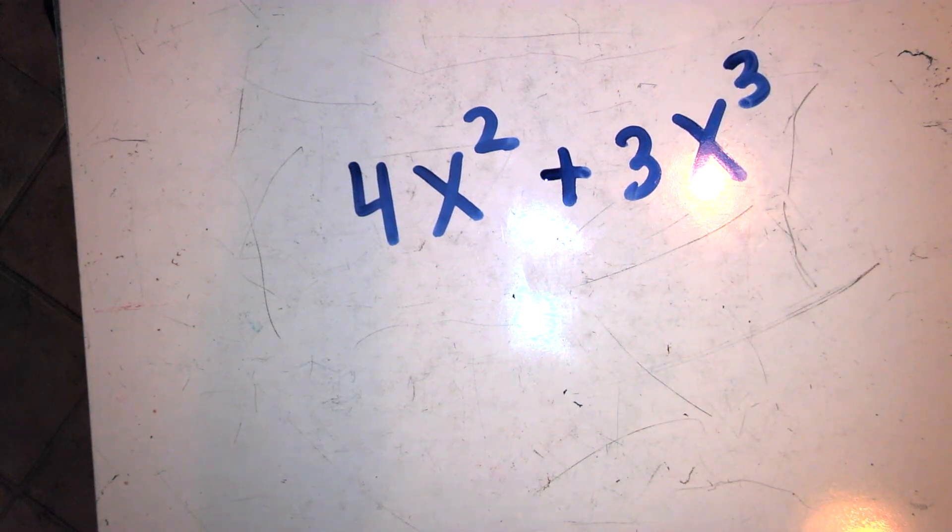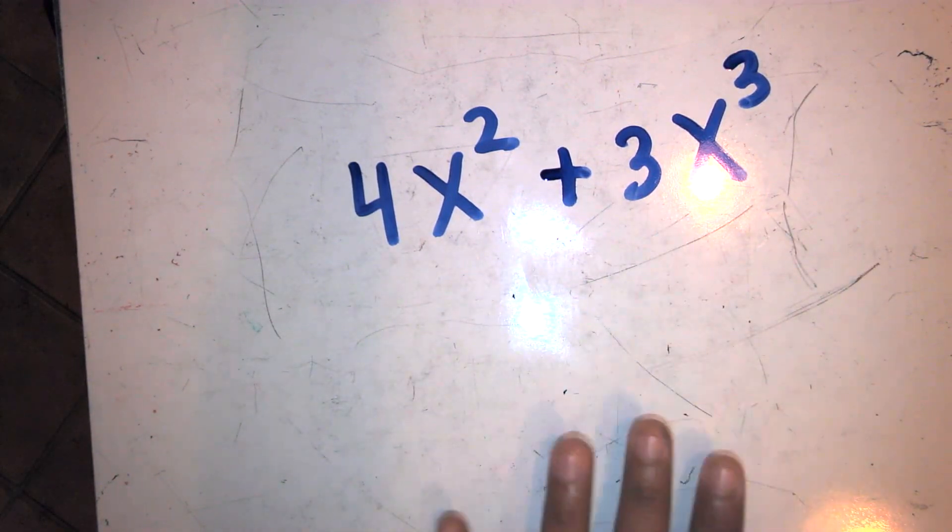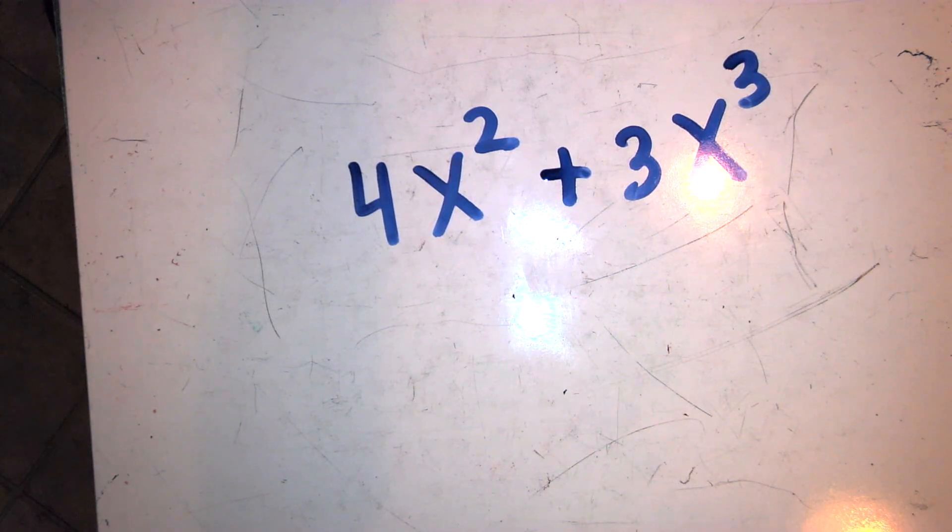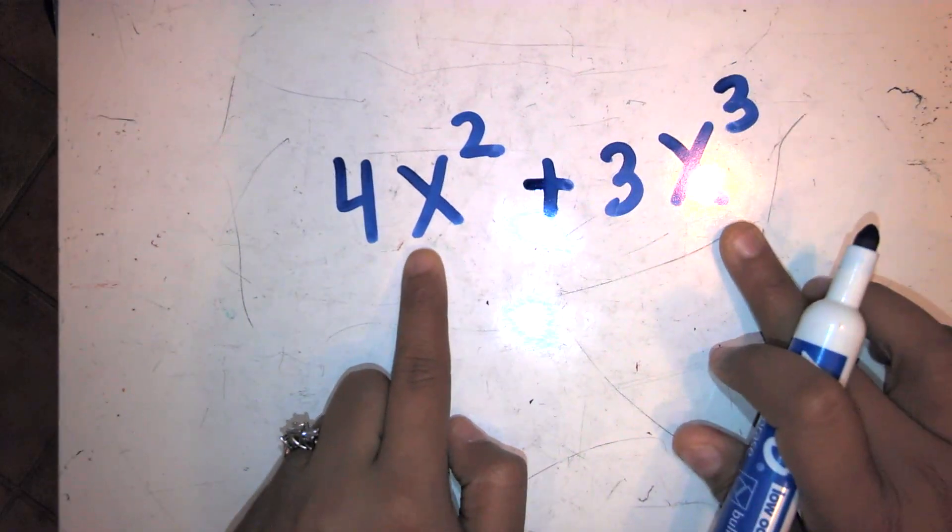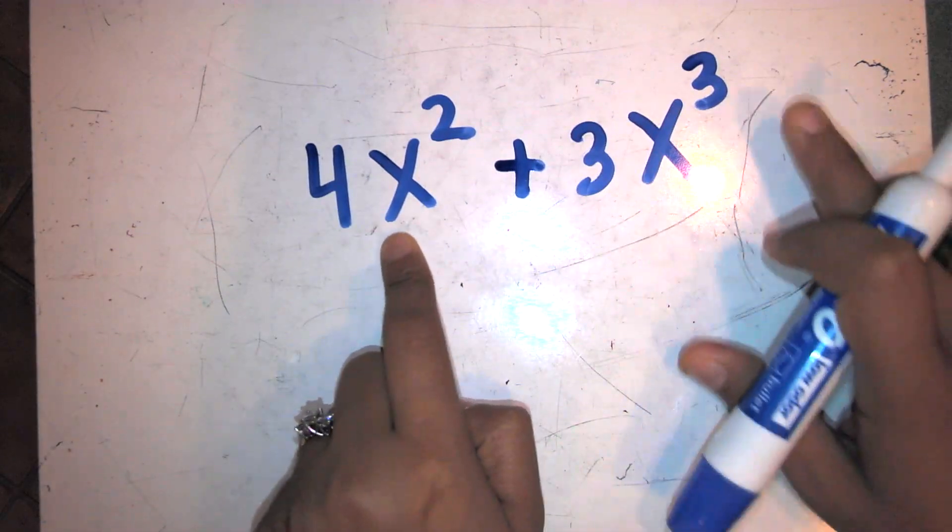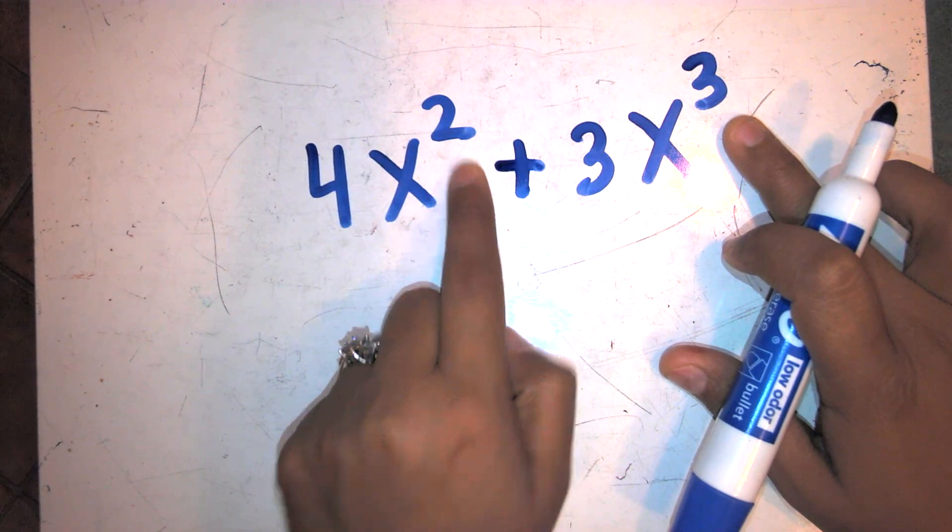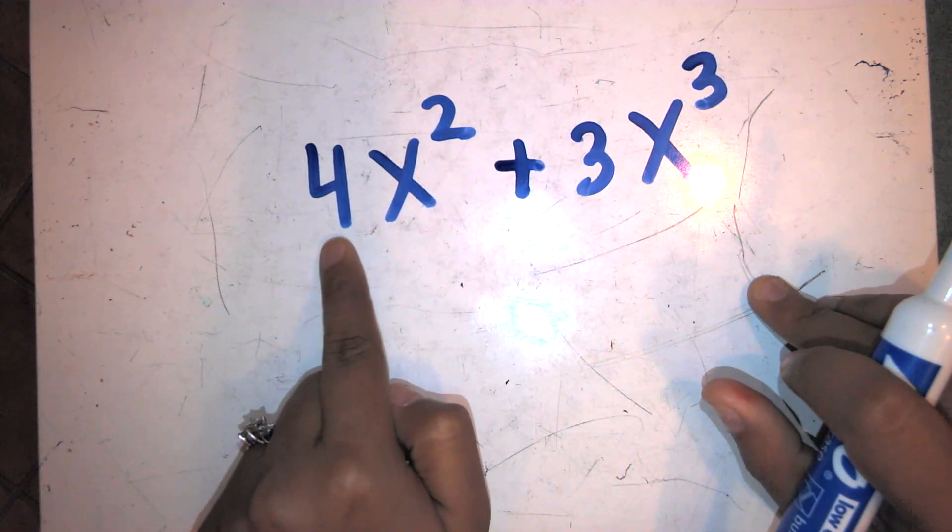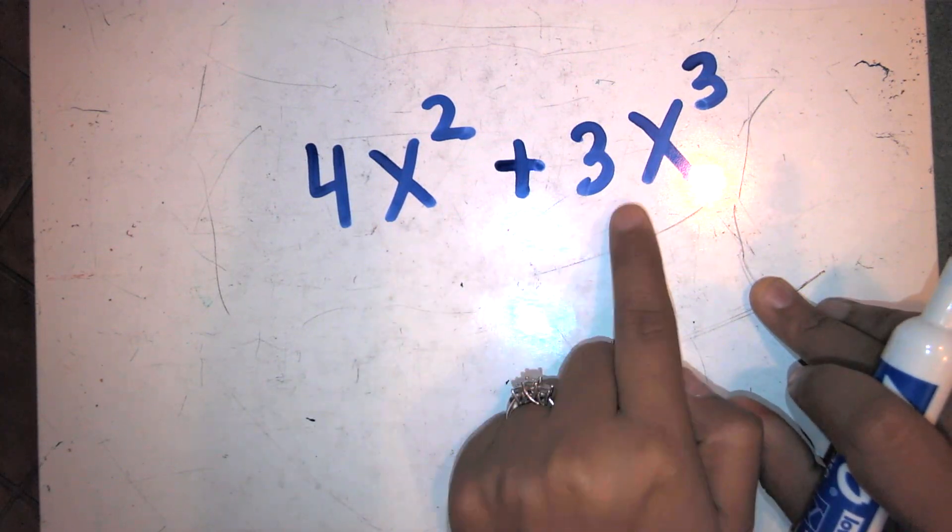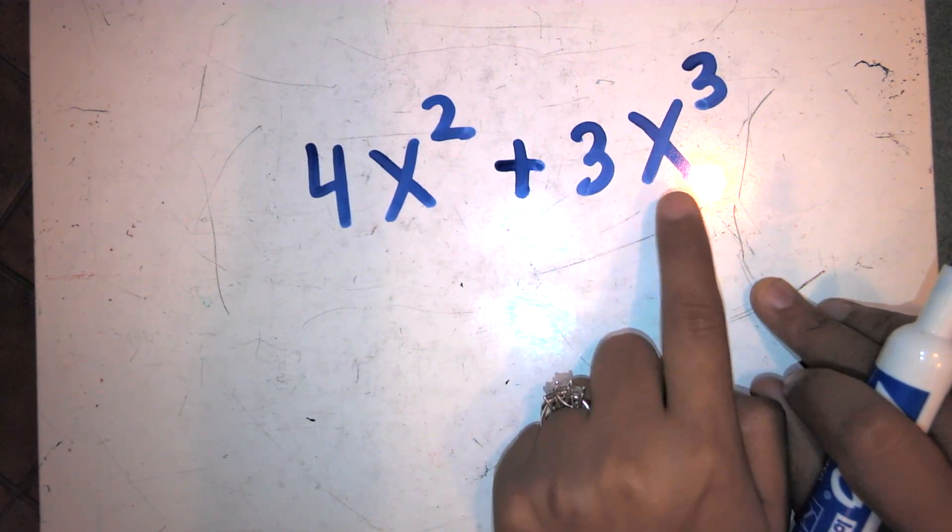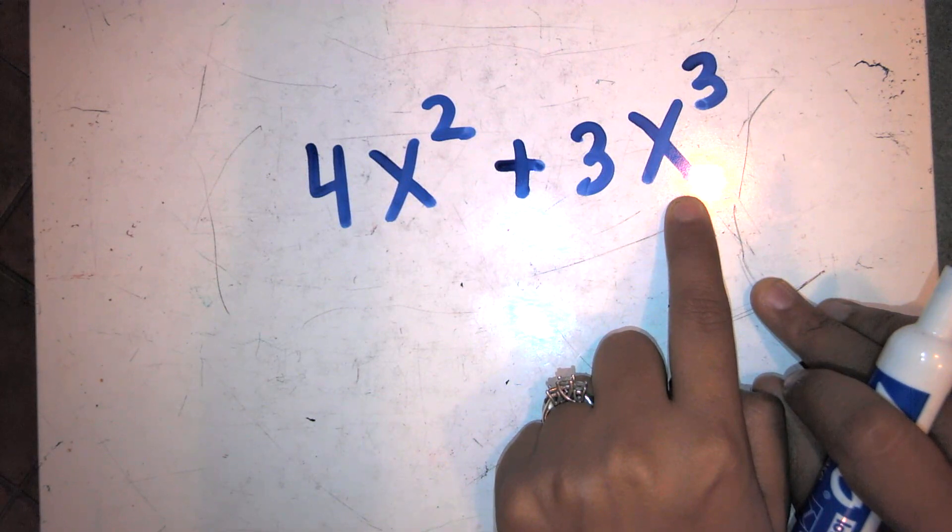They say, oh, four and three is going to give me seven x squares. But you can't combine them. They are unlike terms. Yes, they may have the same variable, but they have different exponents. So this is really four times x squared or four groups of x squares or four multiples of x squares. And this is three groups of x to the cube.